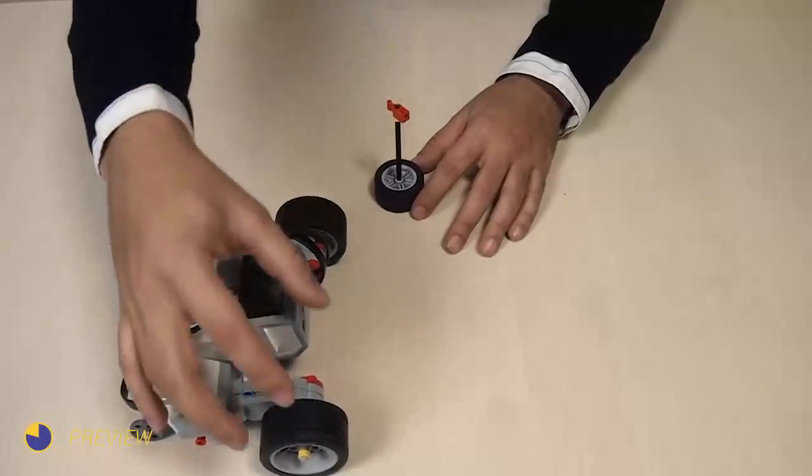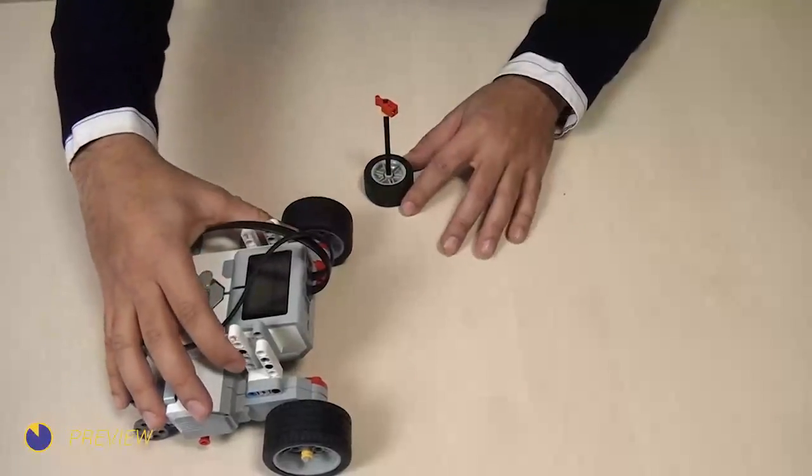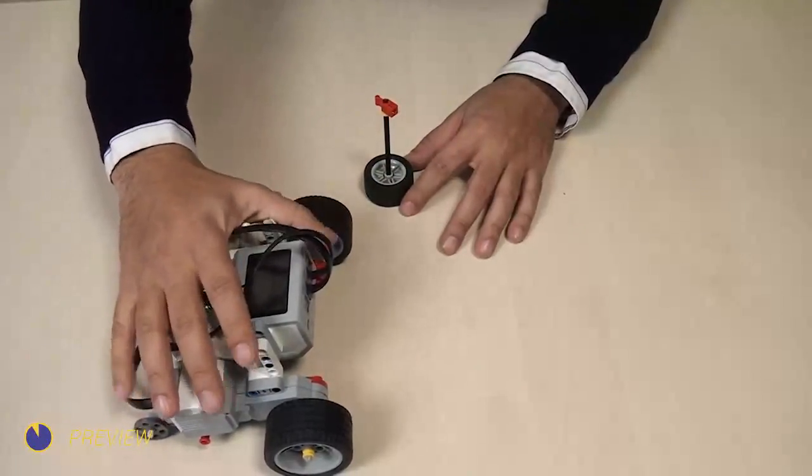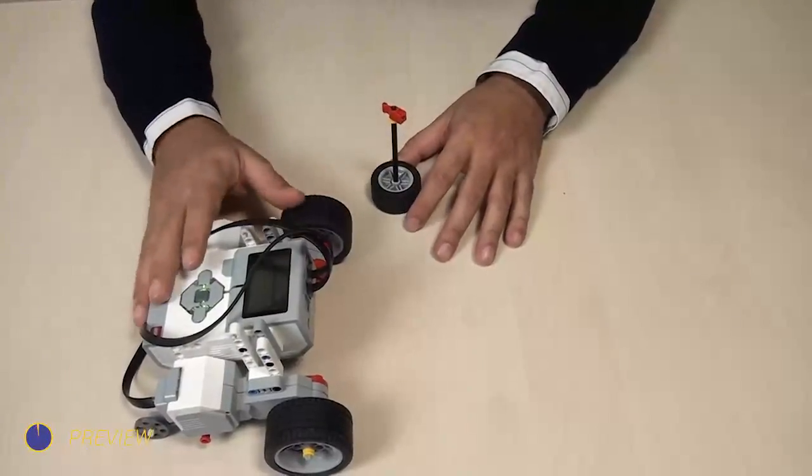So you control the power to the different wheels so that you can turn or you can make the car more stable. Now our goal for this task is just to make the robot turn.